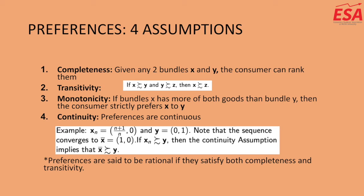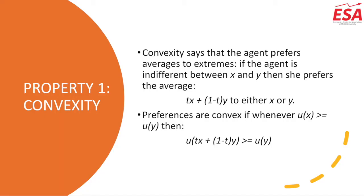Starting with convexity — this basically says that the agent prefers averages to extremes. So if the agent is indifferent between good X and good Y, then she prefers the average, T times X plus 1 minus T times Y, to either good X or good Y alone. Preferences are convex if the utility of good X is at least as good as the utility of good Y, and the formula at the bottom represents that relationship.